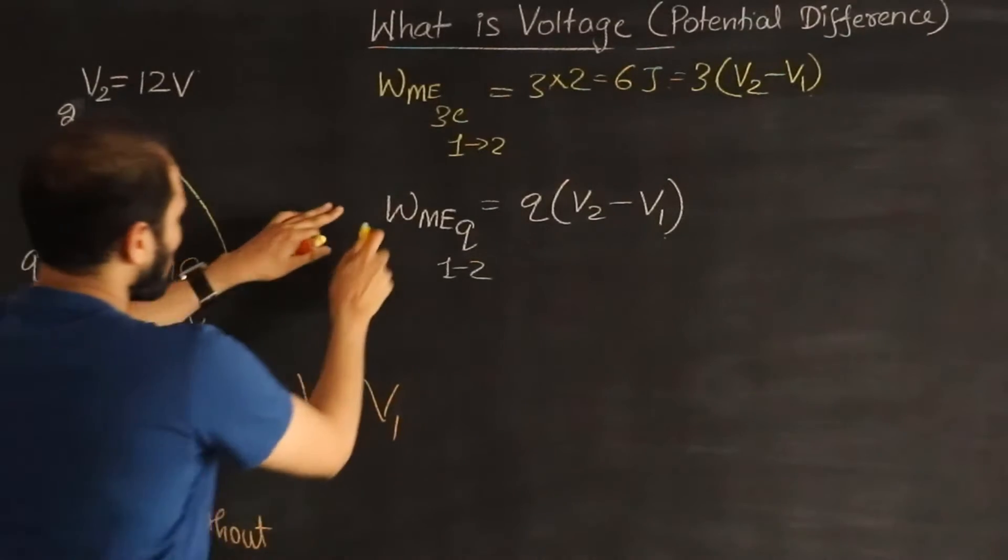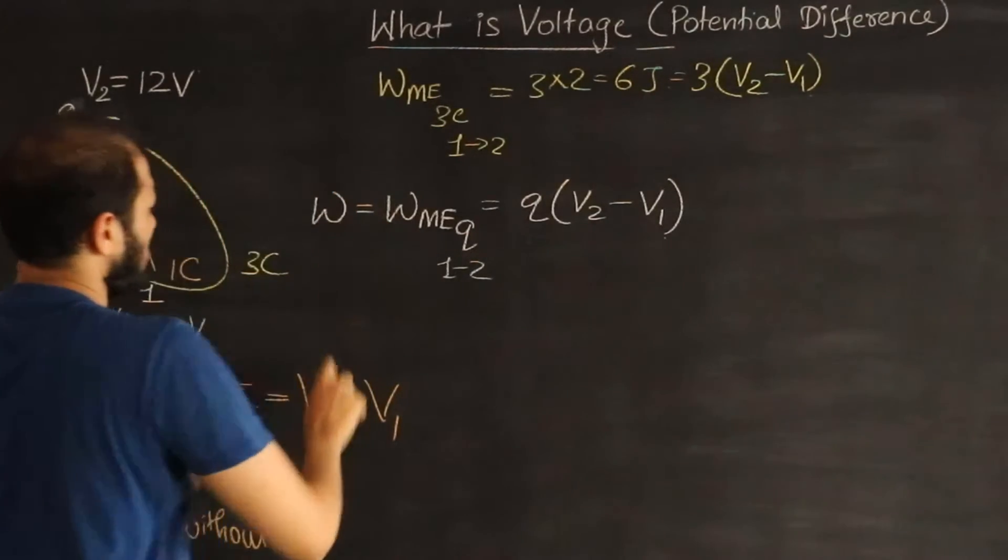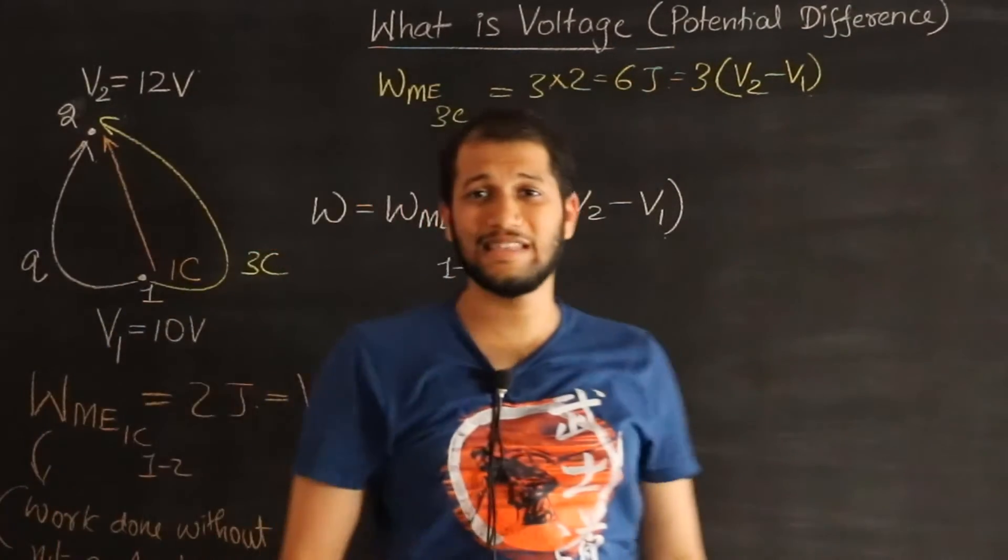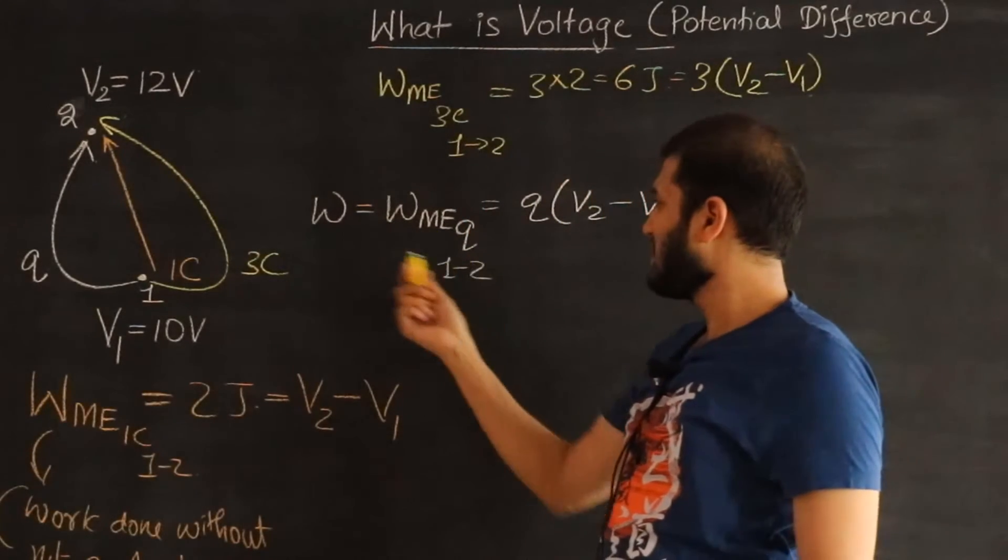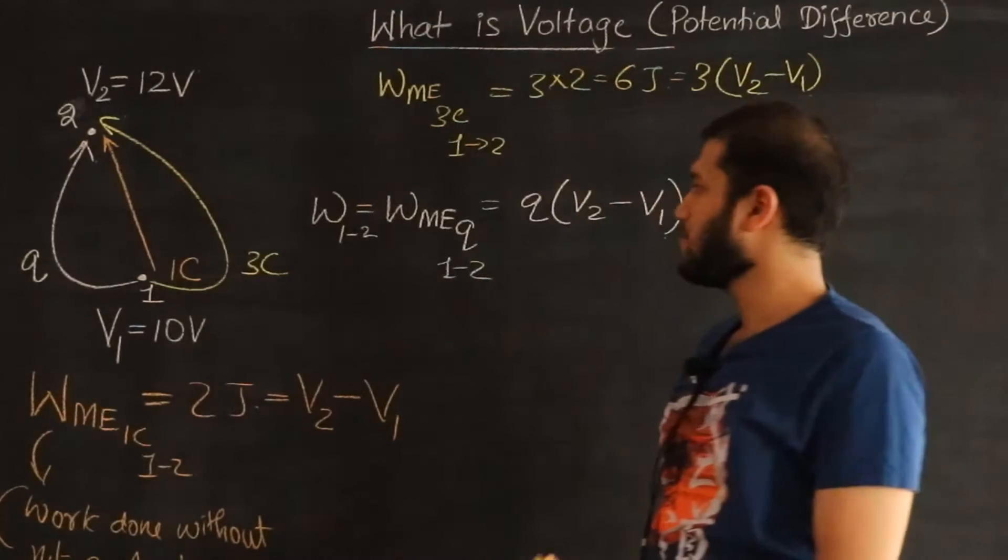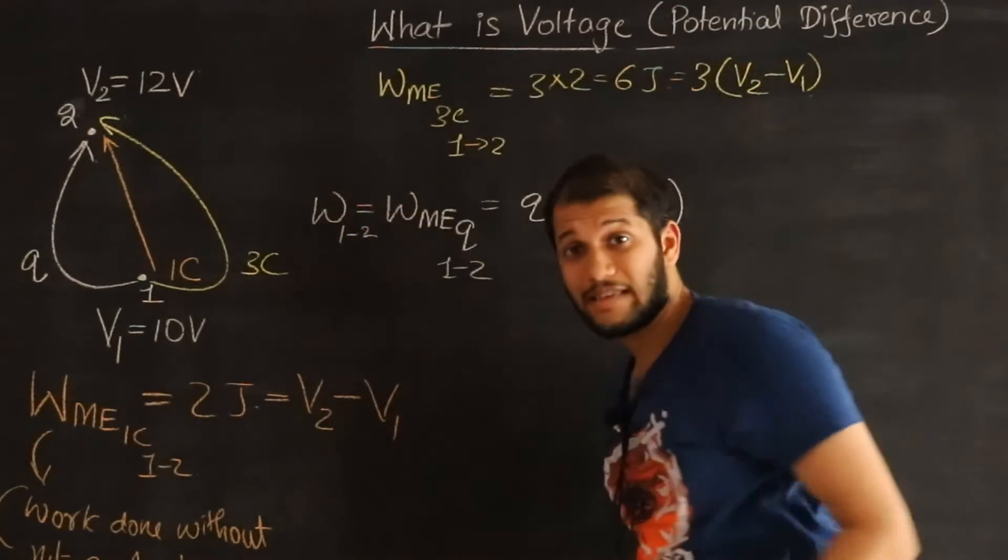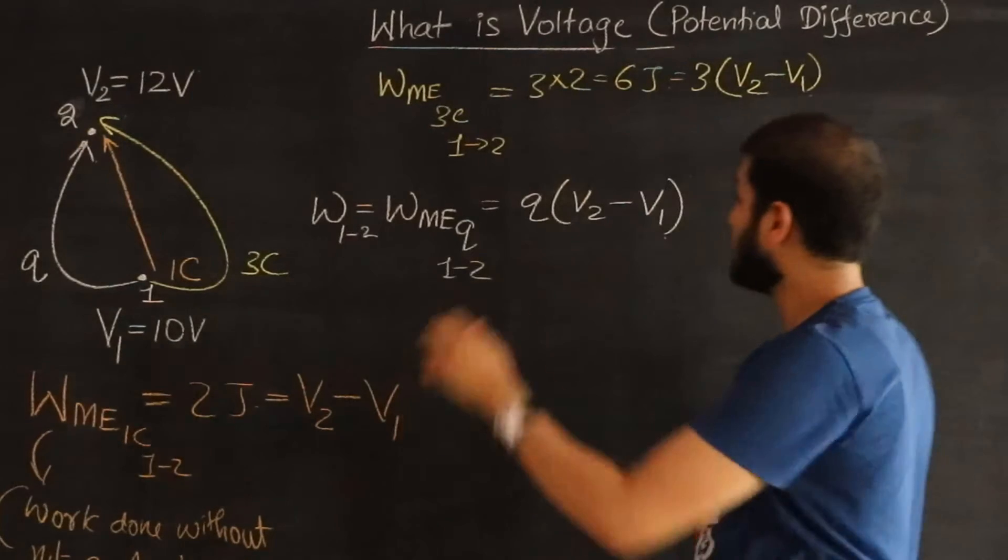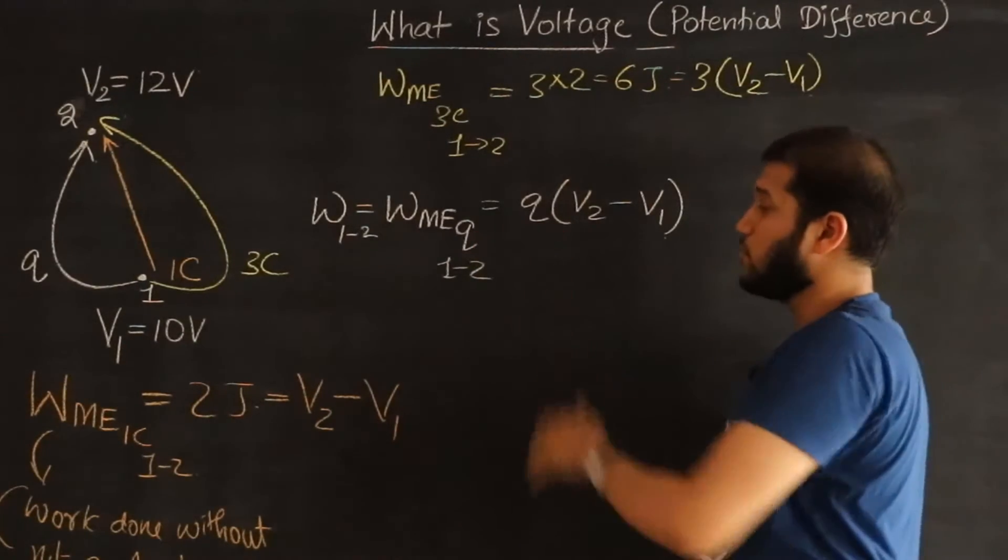For simplicity I am just going to call this as W. Okay, I don't want to write all these indexes. And these indexes is understood. At least I can write from 1 to 2. That much I will write. But rest of them are understood. That's the work done by me in moving the charge Q from one point to another.